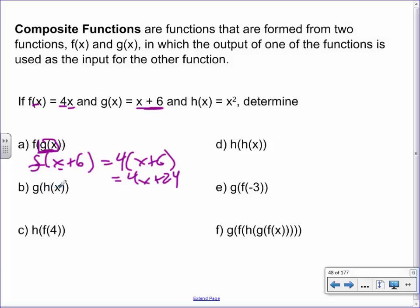Here's another example: h of g of x. h(x) means take your x and square it. So I write g of x-squared. Whatever that x was, I square it first. Then the g equation says to take whatever you have and add 6. But we don't have just x anymore — we have x-squared — so we add 6 to x-squared, giving x² + 6.